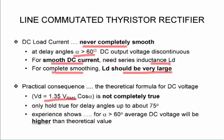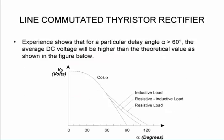Now this formula that we stated only holds up for delay angles up to 75 degrees. And experience shows for higher than 60 degrees the average DC voltage will be higher than the theoretical value as indicated over here. It depends on the load. If that is an inductive load then it will follow the formula that we have given.